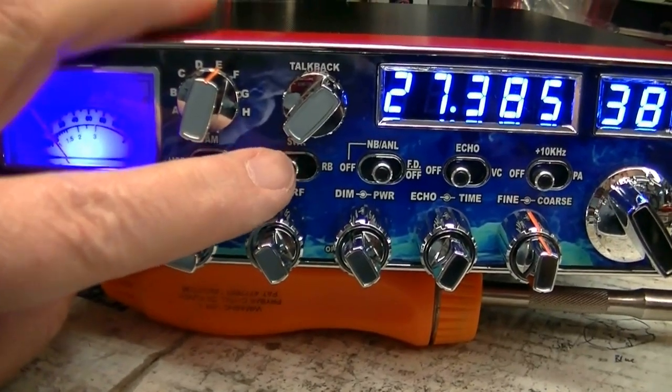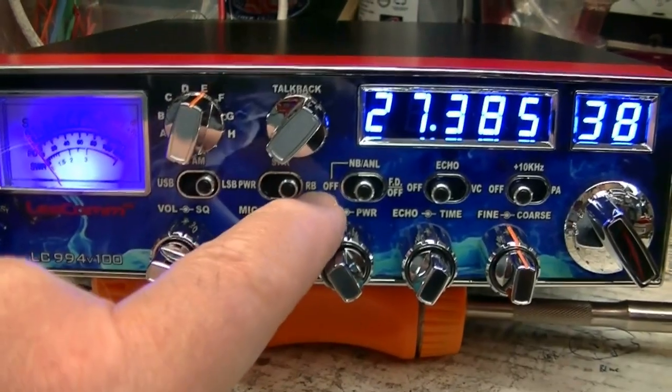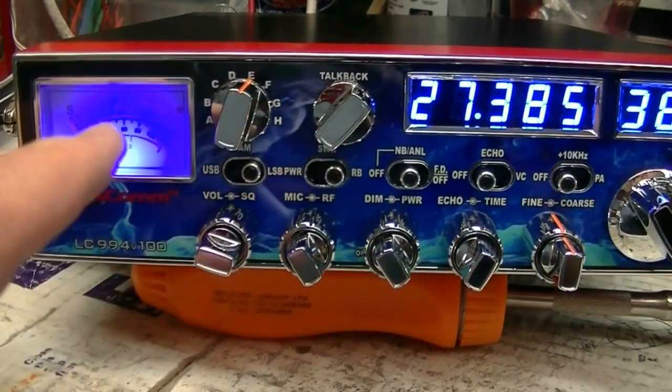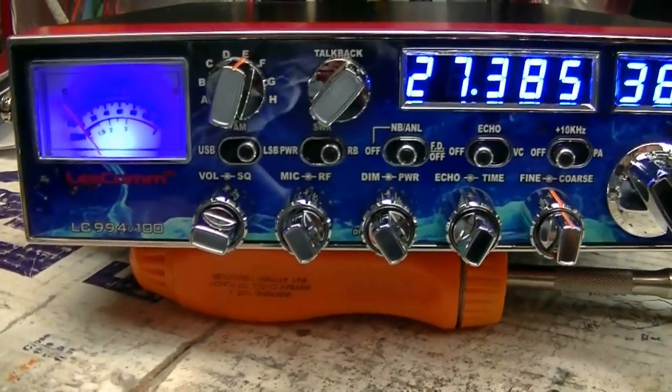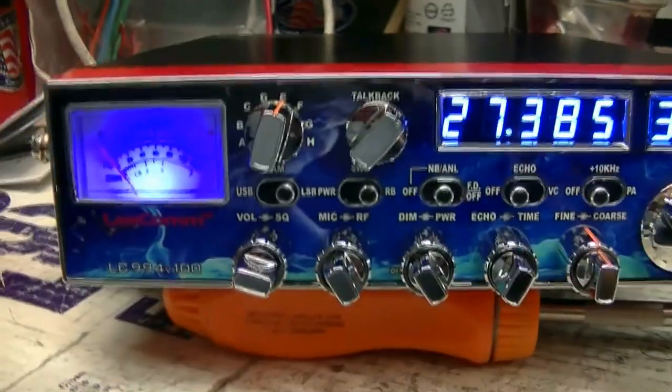Within the power SWR position, the high cut filter is off. If you move it over to the RB position, the high cut filter is on and the meter is reading power. Alright, let's see, we're on the lower side, let me switch to AM. I've got power turned all the way up.